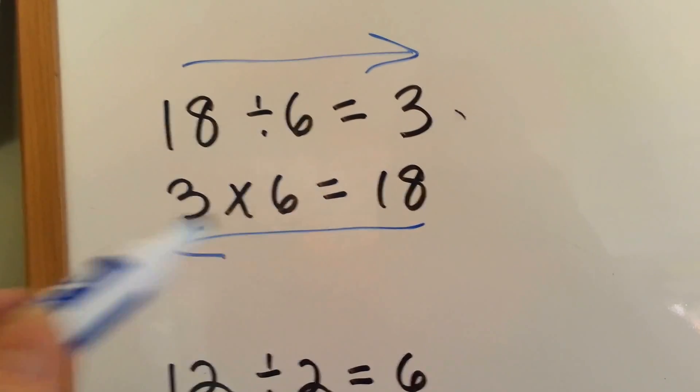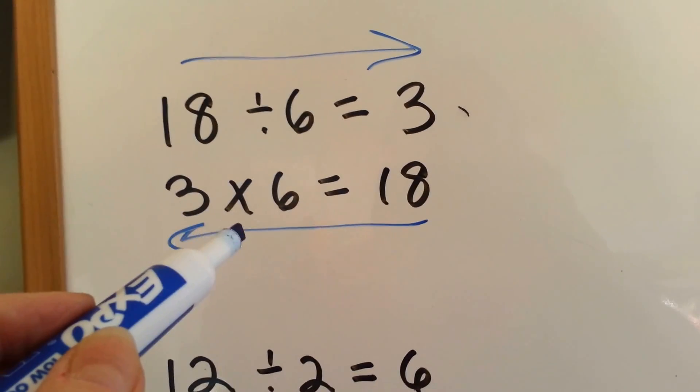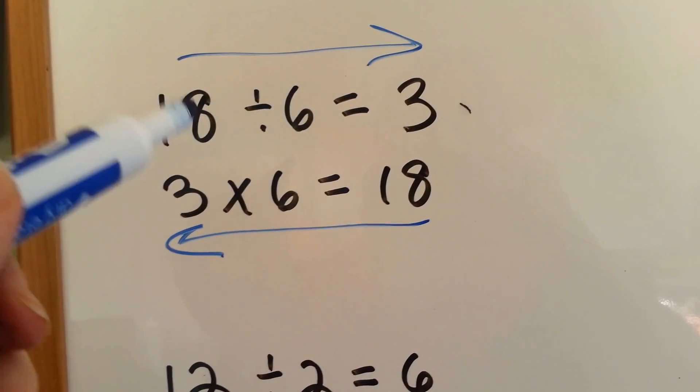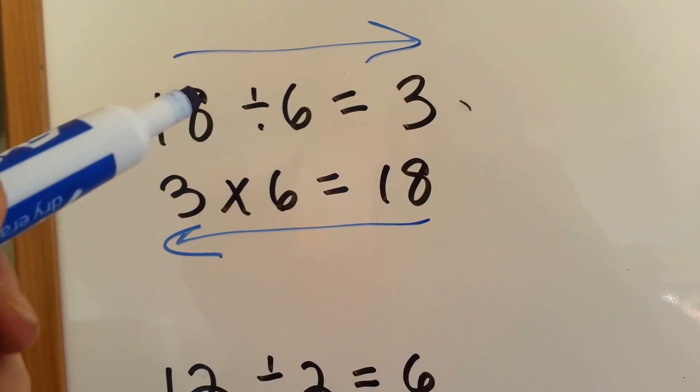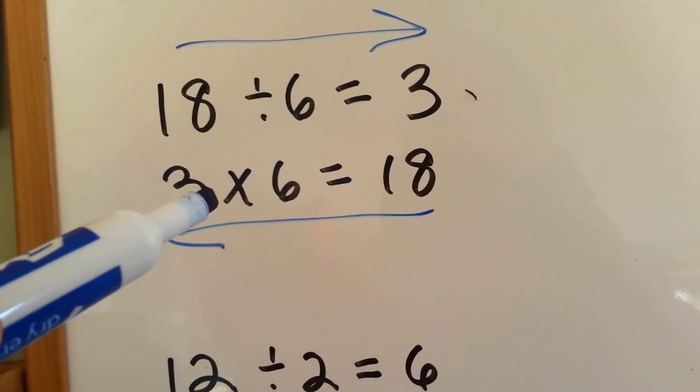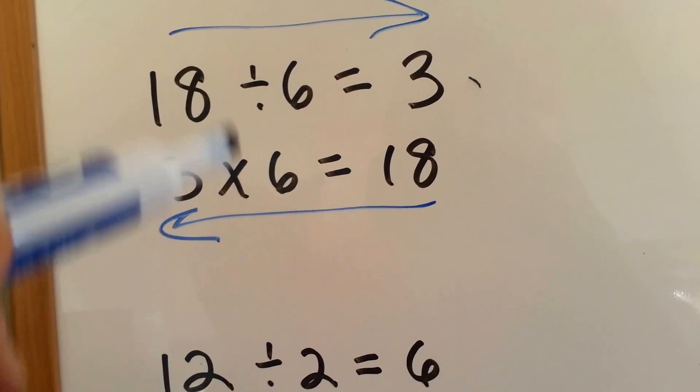That's an inverse operation. That means multiplication undoes whatever division does, and division can undo whatever multiplication does. They're the opposites of each other.